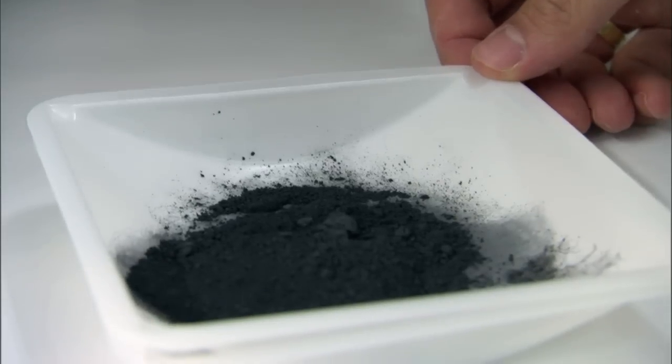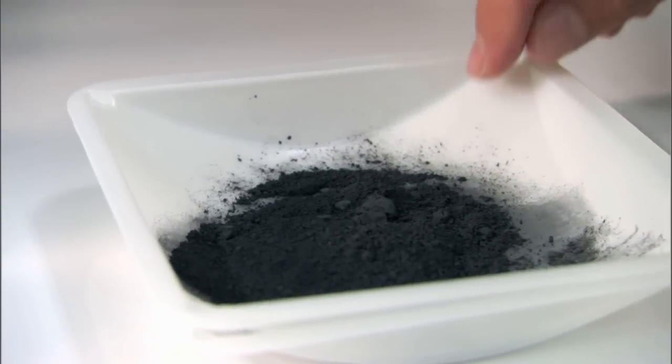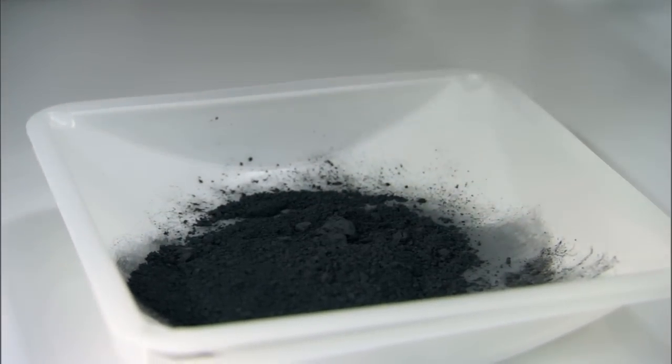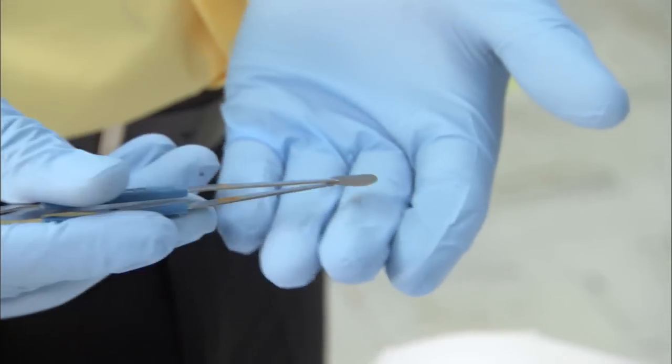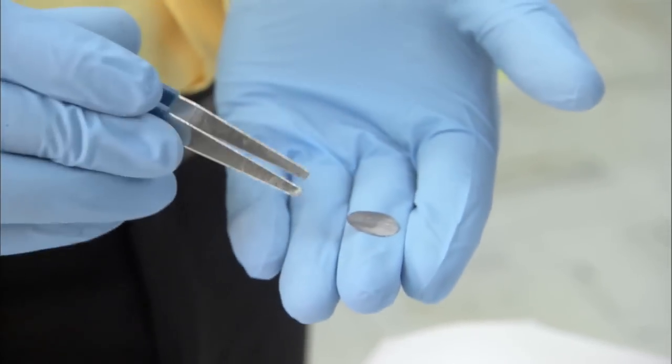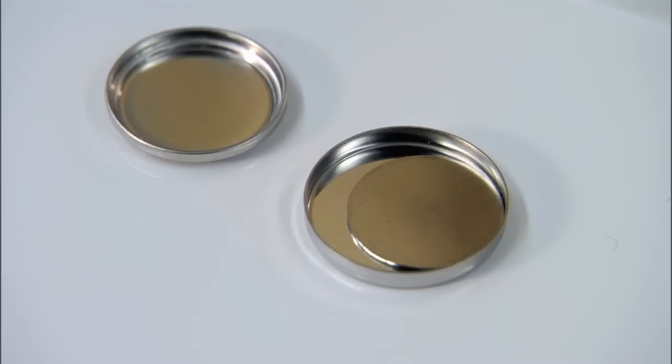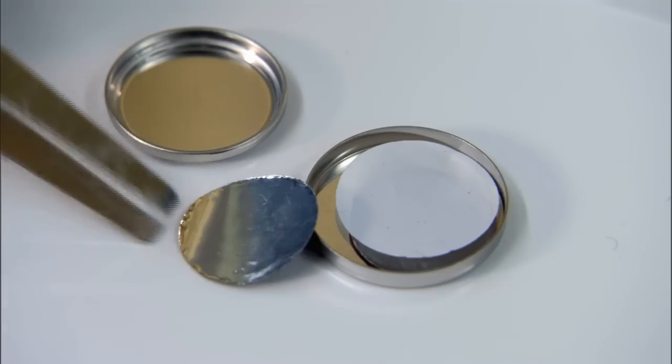That led Vilas to find a really practical application for his plastic bag formulated nanotubes: batteries. He coats very thin slices of copper with the former plastic bag material, adds lithium, and layers them with plastic spacers.